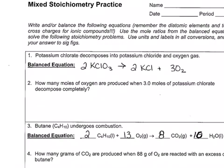For these mixed stoichiometry problems, the first thing I'm going to do is identify what I'm given and identify the unknown. So: how many moles of oxygen are produced when three moles of potassium chlorate decompose completely? My given is three moles of potassium chlorate, and I'm going to identify that in my equation as well.